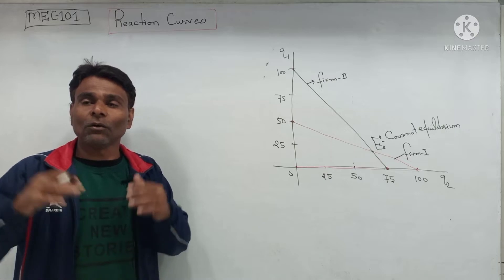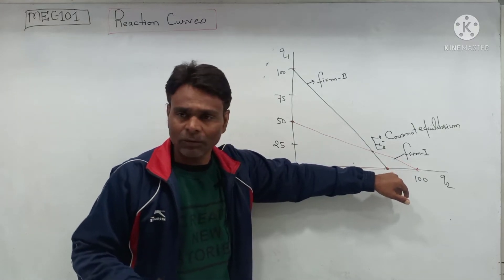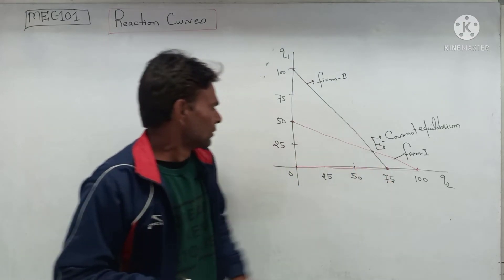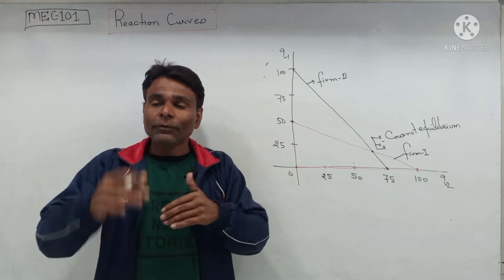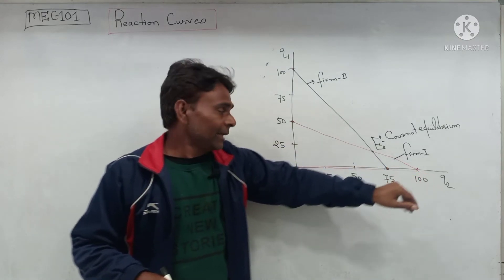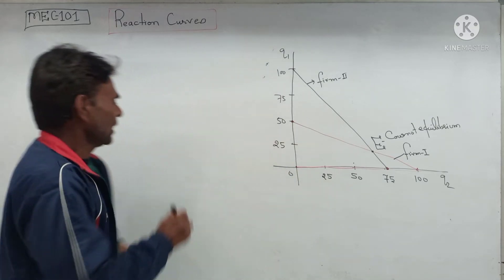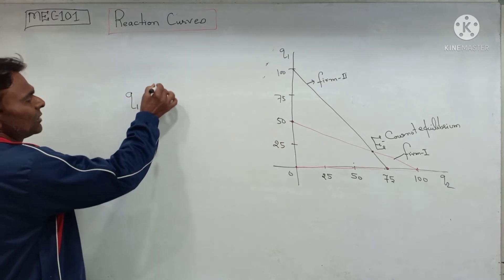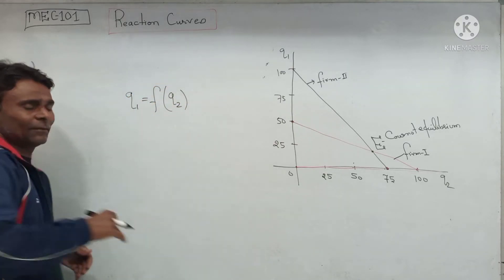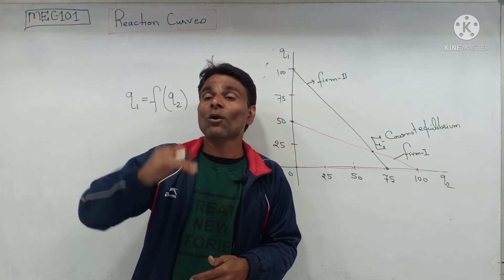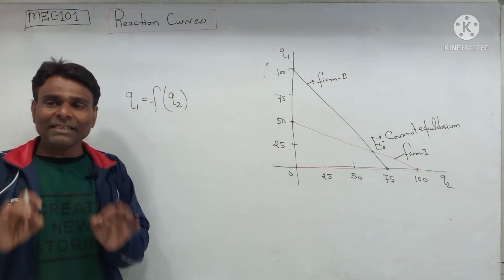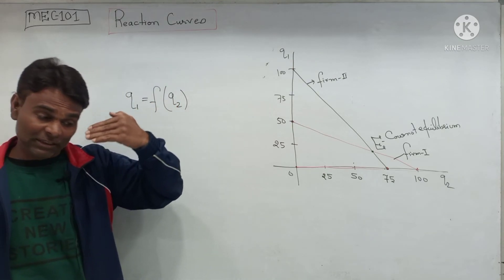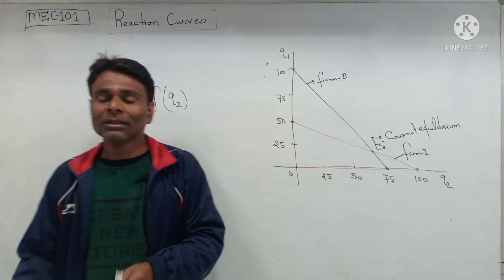If firm one thinks its competitor, firm two, will produce 75 units of output, then firm one will produce 12.5 units. And if firm one thinks firm two will produce 100 units, you can see from the reaction function that the level of output produced by firm one is clearly a function of the output being produced by the other firm — showing the relationship between the profit-maximizing output of a firm and how much output it thinks its competitor will produce. This is called the reaction function.